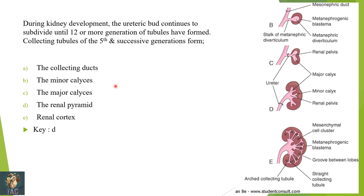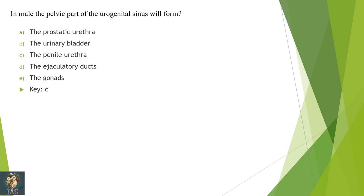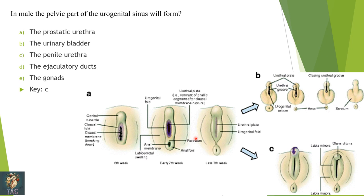Next: in the male, the pelvic part of the urogenital sinus will form — prostatic urethra, urinary bladder, penile urethra, ejaculatory ducts, or gonads? The pelvic part of the urogenital sinus develops initially forming the genital tubercle, also called the phallus. The phallus elongates; urethral folds are present on the sides, and when these folds fuse in the midline, they close the opening and form the penile urethra. So the correct option is penile urethra.